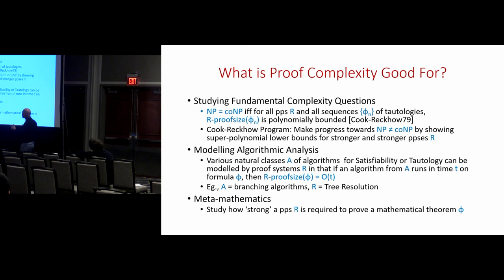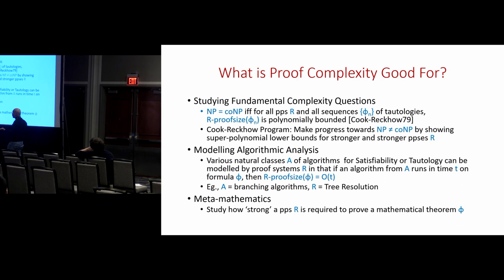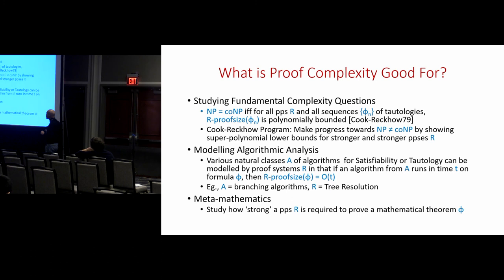I'm assuming most people here believe that NP does not equal co-NP. If you believe instead that NP equals co-NP, you'd know there is a proof system with polynomially bounded proofs for all tautologies, meaning there are no superpolynomial lower bounds — which would be a very simple explanation for why proof complexity lower bounds are hard. What I'll try to point towards is a somehow more interesting and surprising explanation of why proof complexity lower bounds are hard.